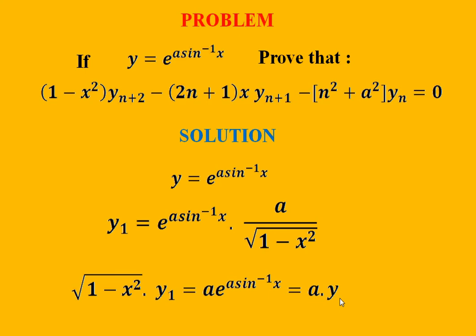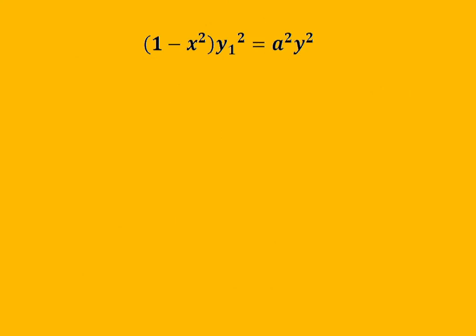Since e^(a·sin⁻¹x) equals y, this becomes √(1 - x²)·y1 = a·y. To remove the square root, we square this relation, giving (1 - x²)·y1² = a²·y², which can be written as (1 - x²)·y1² - a²·y² = 0. We will differentiate this equation again with respect to x to obtain the relation between y2, y1, and y.